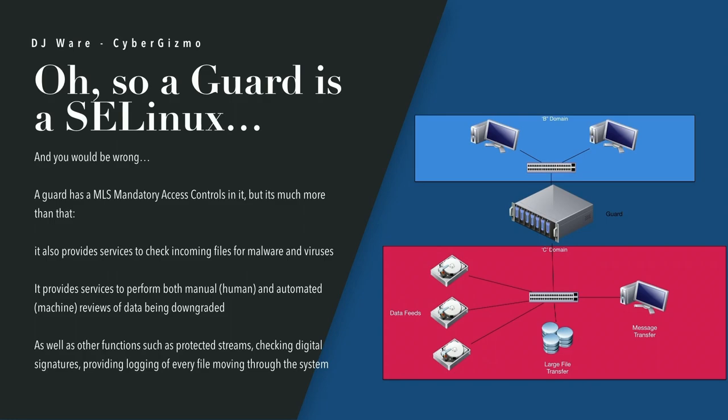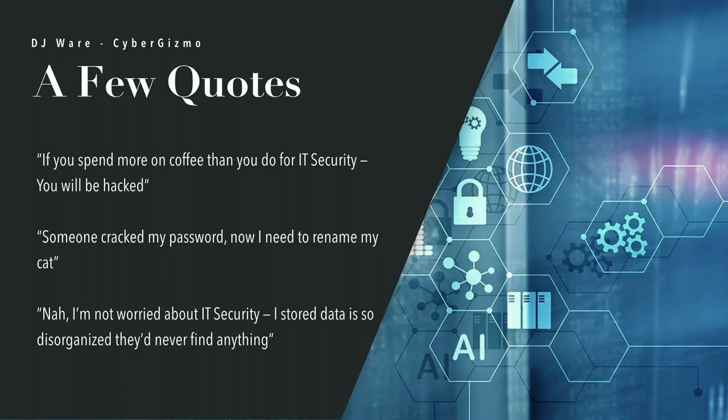You might also conclude that a guard is SELinux — Red Hat's documentation says they implement MLS using SELinux. Yes, they do have a document that says that, but that would not implement a full guard. A guard needs mandatory access controls, which is true — you can definitely do MAC with SELinux. However, you also need to check that incoming files don't have malware and viruses, which SELinux doesn't do. You need services to perform manual reviews during downgrading, and you need other functions such as protected streams, digital signatures, and logging, which SELinux isn't going to do for you.